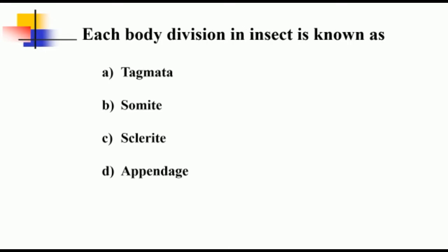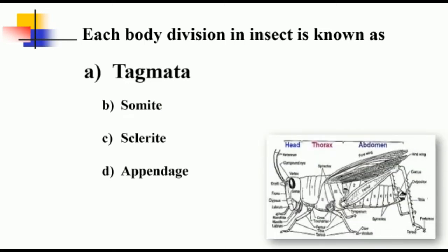Each body division in insect is known as tagmata. As we know, the insect's body is broadly divided into three regions: head, thorax, and abdomen. The process through which these body divisions are formed is known as tagmosis, and hence each body division will be referred to as tagmata. Whereas somite or metamer refers to individual segments like head is divided into six segments, thorax into three (pro, meso, and meta), and abdomen is composed of eight to eleven segments.